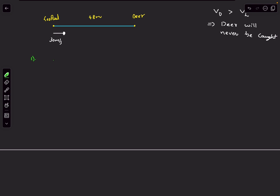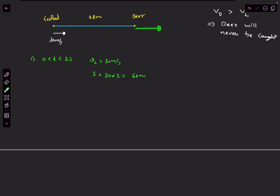From t=0 to t=2 seconds, the leopard's speed is 30 m/s, so its displacement in the first two seconds is 30×2 = 60 meters. Since the deer started 48 meters ahead, the leopard is now 60−48 = 12 meters to the right of the deer's initial position. Let's call these points A and B — after two seconds, the leopard is 12 meters past the deer's starting point.